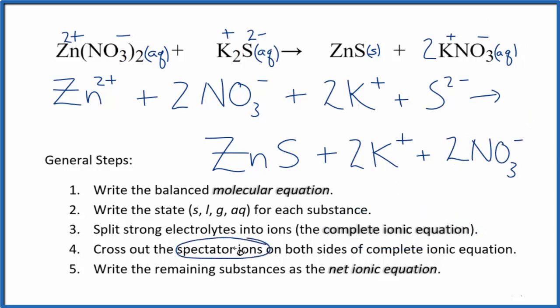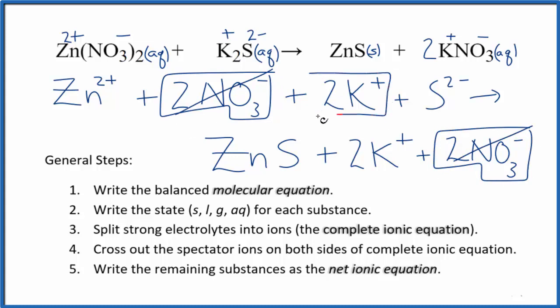Now we cross out spectator ions. They're on both sides. I can see in the reactants here, I have two nitrate ions and in the products. So let's cross those out. Those are spectator ions. We have these two potassium ions, and again in the products, spectator ions. We cross them out, and what's left, that's the net ionic equation for zinc nitrate plus potassium sulfide.